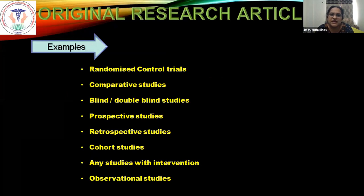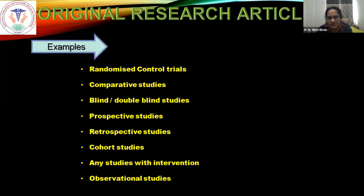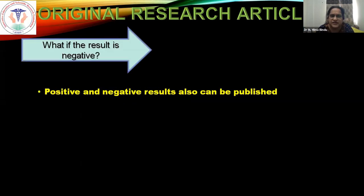Types of studies that can be published as an original research article include clinical trials, comparative studies, blind and double-blind studies, prospective and retrospective studies, cohort and observational studies, and basically any interventional studies. Each has a definite structure, and findings are analyzed by the researcher or their team. Results do not necessarily have to be positive — if research is genuinely done with correct methods and results are opposite to what is in the literature, that is still credible and worth publishing. This is accepted by all journals.